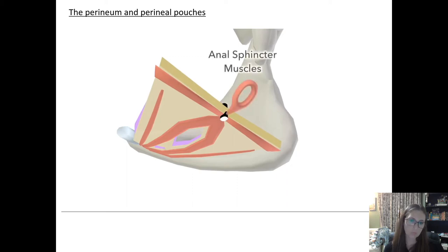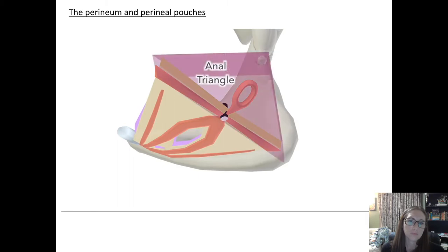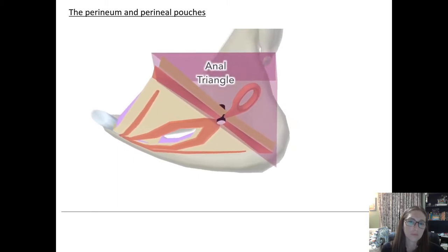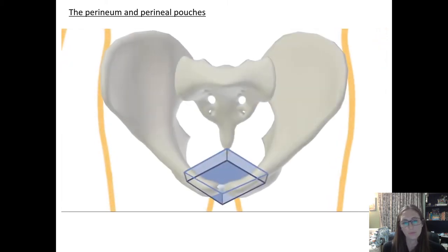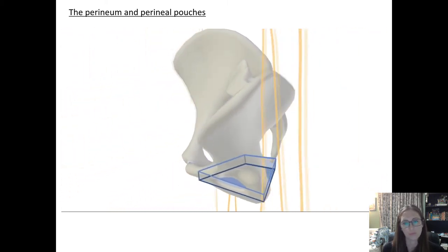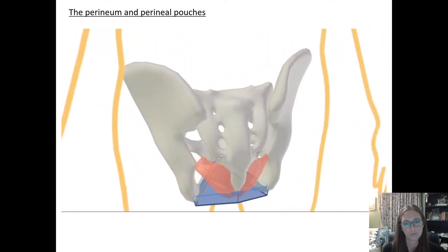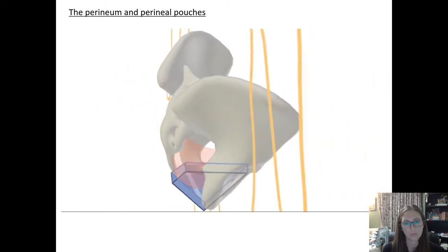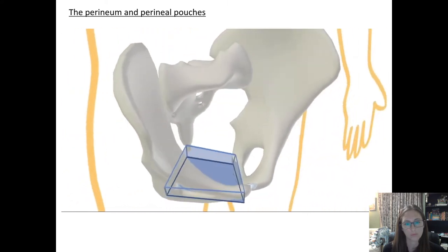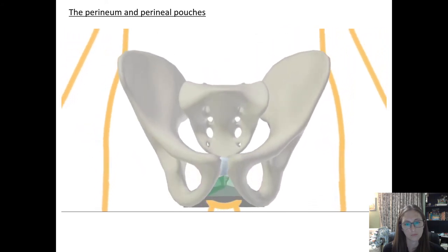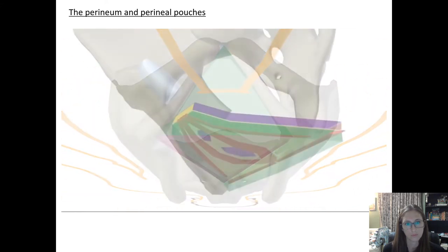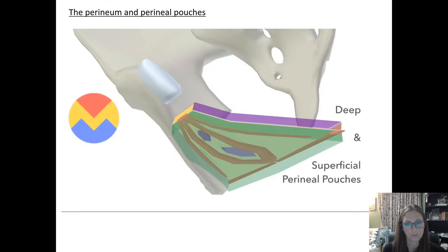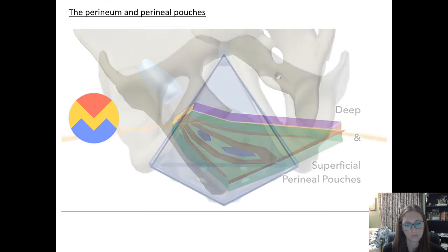Posterior and superior to the perineal body are the anal sphincter muscles, the centerpiece of the anal triangle. To summarize: the perineum is a 3D space with the pelvic floor muscles as its ceiling, divided into the urogenital triangle anteriorly and the anal triangle posteriorly. There are two perineal pouches — superficial and deep — both in the urogenital triangle and separated by the perineal membrane.